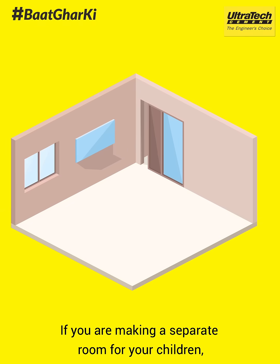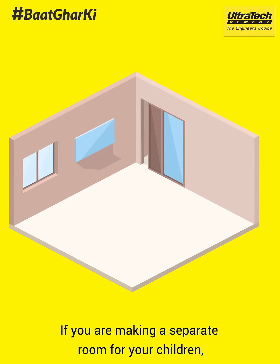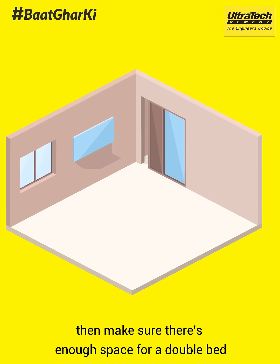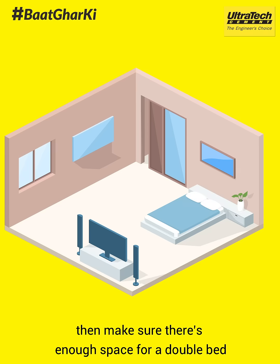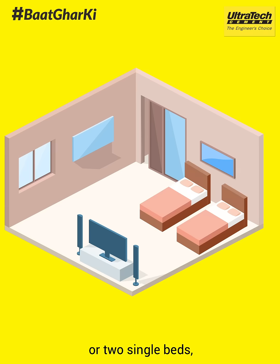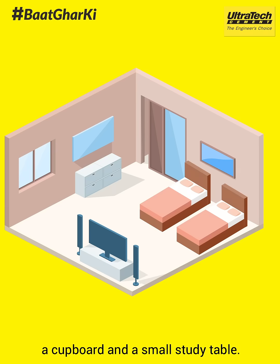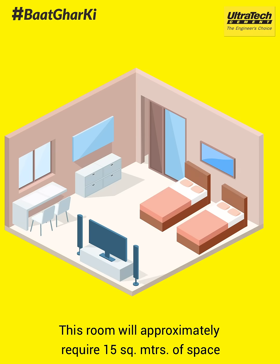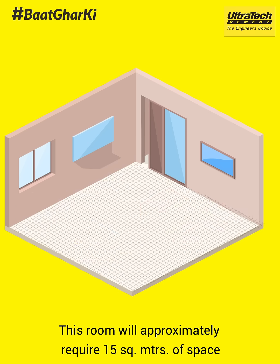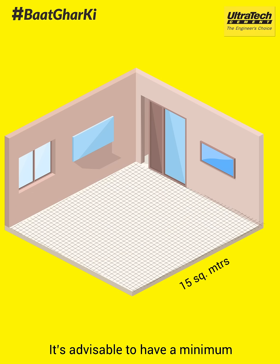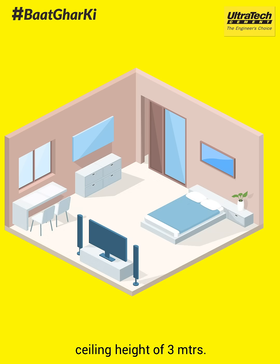If you are making a separate room for your children, make sure there's enough space for a double bed or two single beds, a cupboard, and a small study table. This room will approximately require 15 square metres of space. It's advisable to have a minimum ceiling height of 3 metres.